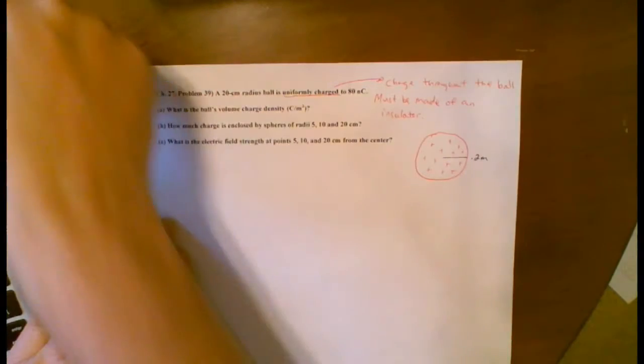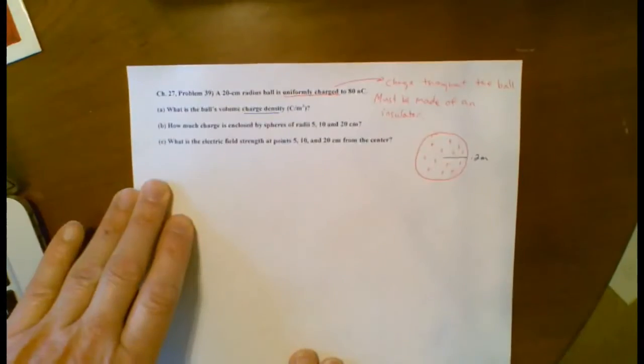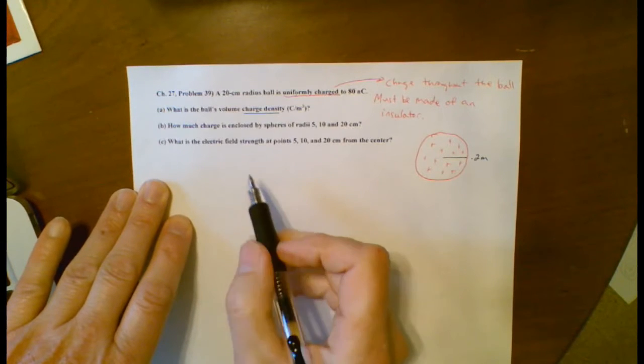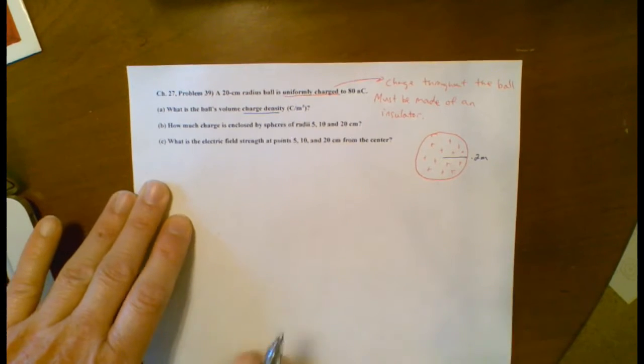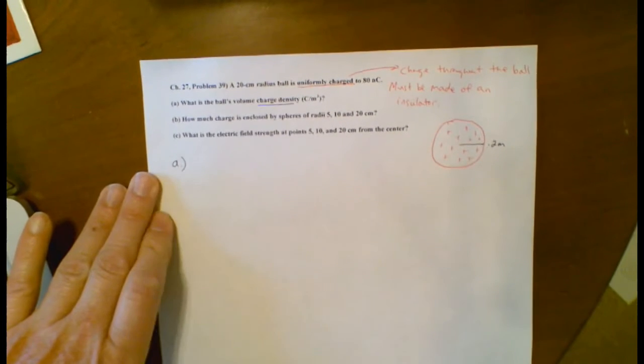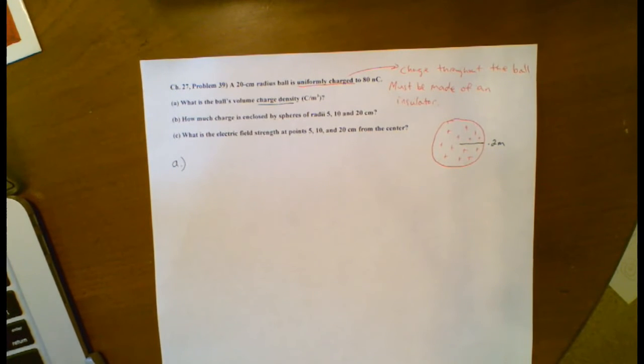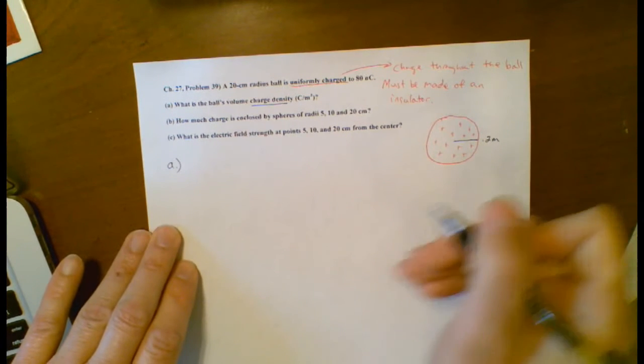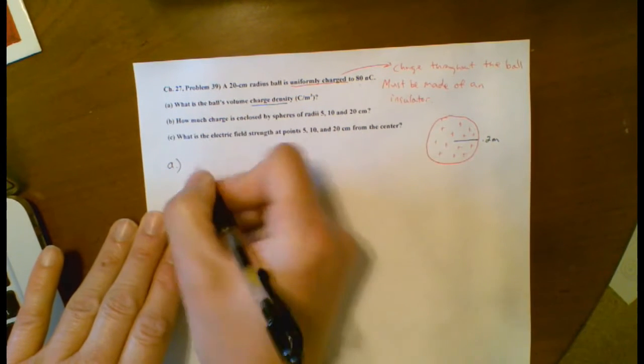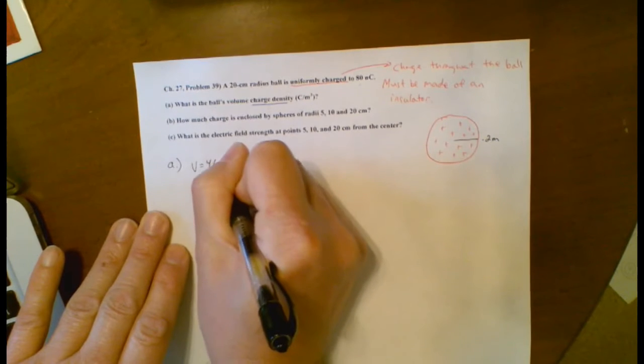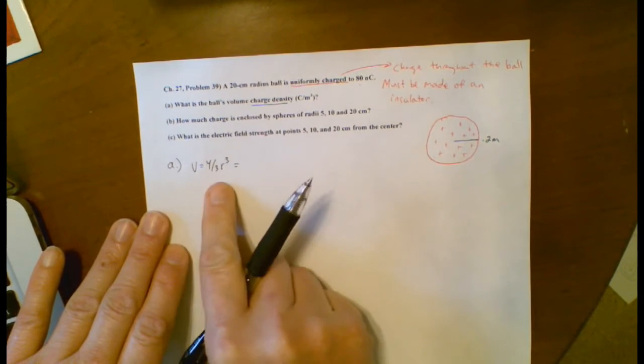So the first part of this is figuring out the volume charge density. Well, density is just something per unit volume. Oftentimes, mass density is kilograms per cubic meter. This is charge density per cubic meter.